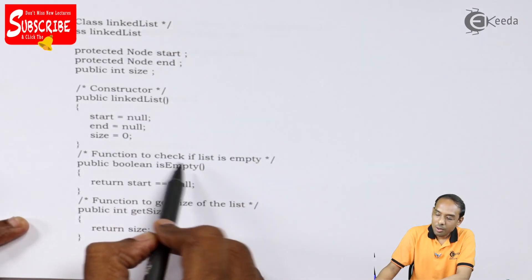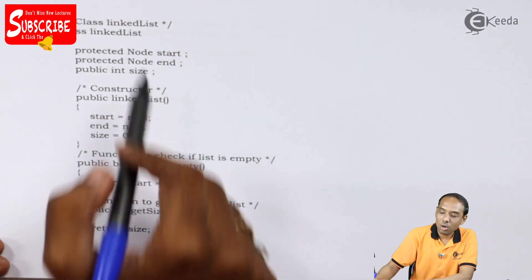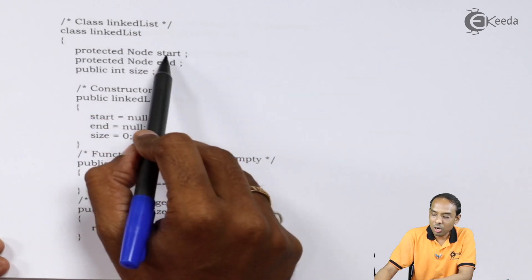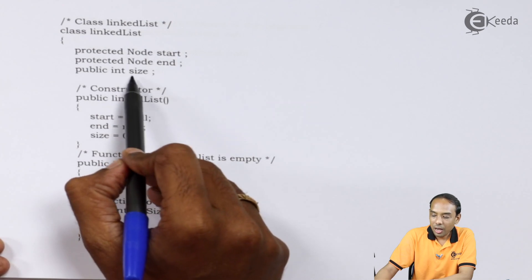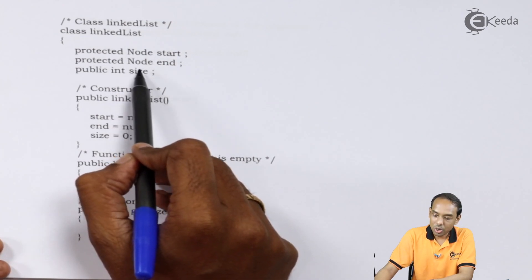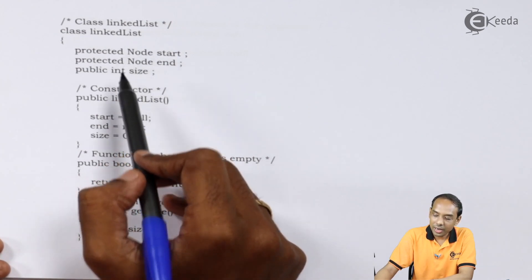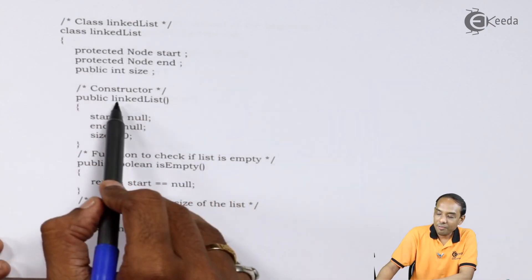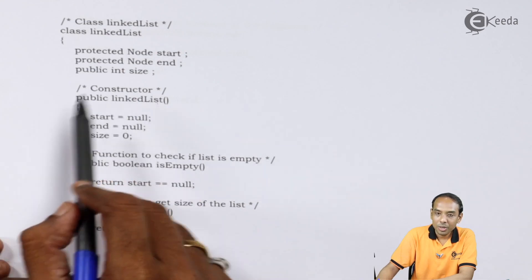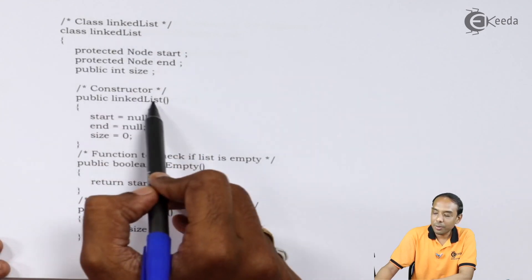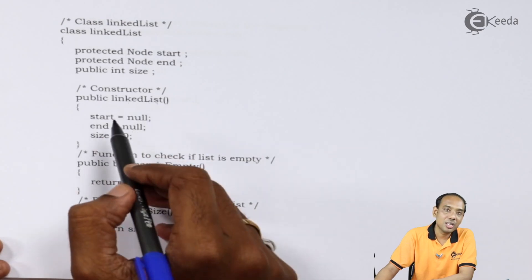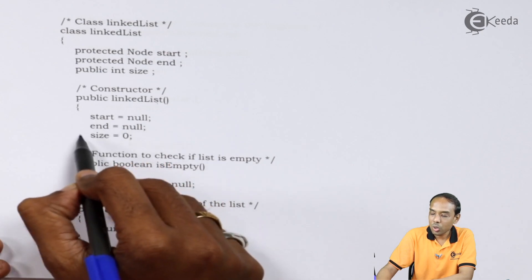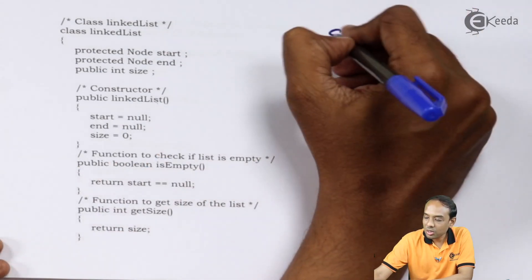I've defined a function called 'isEmpty'. Before that, I need to create a class called LinkedList. Inside that, I've created node reference variables called 'start' and 'end', and I've declared a variable called 'size'. Inside this, I've created a constructor called LinkedList — you understand it is a constructor because the class name and the function name are the same. Now I've initialized the values.